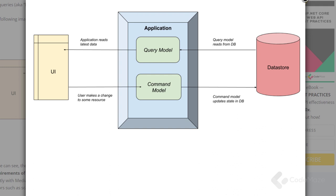The CQRS pattern makes no formal requirements of how this separation occurs. It could be as simple as a separate class in the same application, all the way up to separate physical applications on different servers. The decision would be based on factors such as scaling requirements and infrastructure. The key point is that to create a CQRS system, we just need to split the reads from the writes.